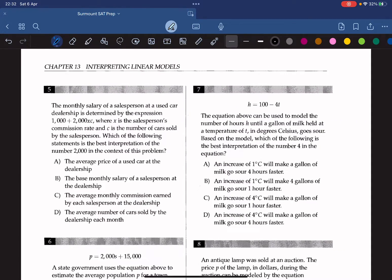Moving on to question 5: the monthly salary of a salesperson at a used car dealership is determined by the expression 1,000 plus 2,000 times xc, where x is the salesperson's commission rate and c is the number of cars sold by the salesperson. Which of the following statements is the best interpretation of the number 2,000 in the context of this problem? The salesperson is earning a commission based on the amount of money that the salesperson is bringing in for profit. To get that, all we need to do is multiply the number of cars sold by the average price of each car. Since we know that x and c already represent the commission rate and the number of cars sold, thus the number 2,000 should be the average price of each car, which is answer B.